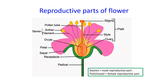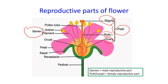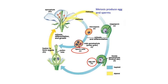Now let's look at the reproductive parts of a flower. There are two main parts: the stamen, which is the male reproductive part, and the pistil or carpel, which is the female reproductive part. The pistil consists of the stigma, style, and ovary, while the stamen consists of the anther and filament.